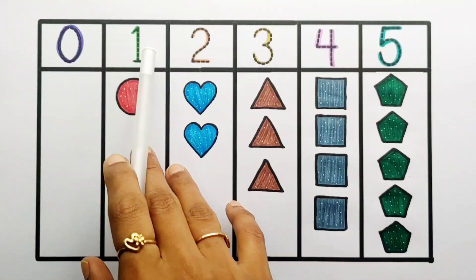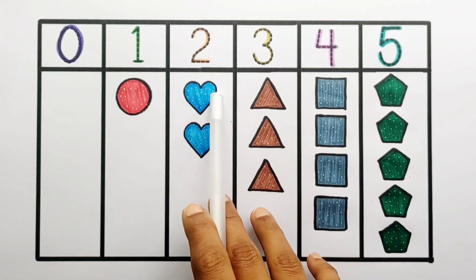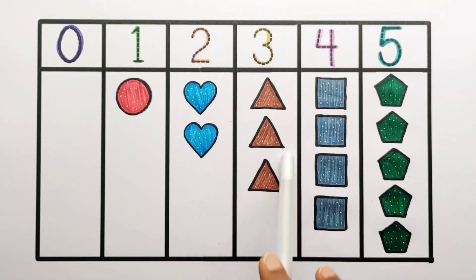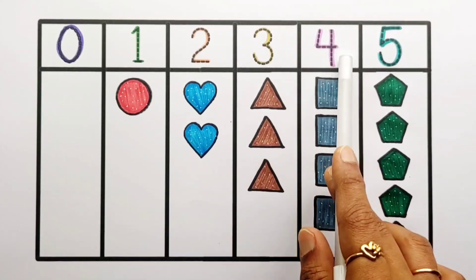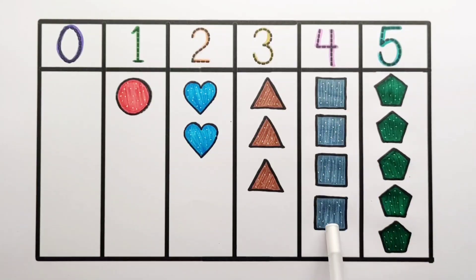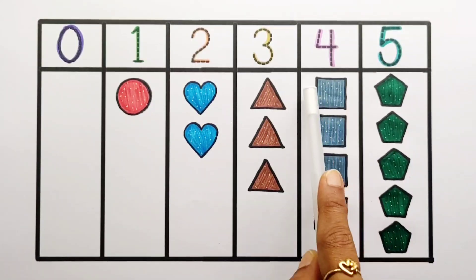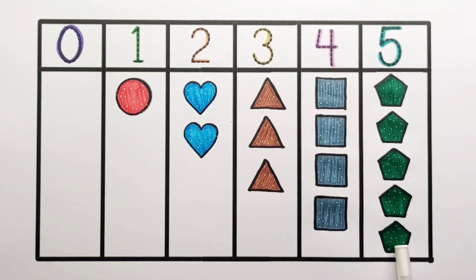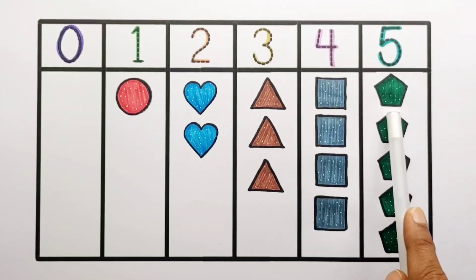0, 1 circle. Number 2: 1, 2, two hearts. Number 3: 1, 2, 3, three triangles. Triangle has 3 sides. Number 4: 1, 2, 3, 4, four squares. Square has 4 sides. Number 5: 1, 2, 3, 4, 5, five pentagons. Pentagon has 5 sides.